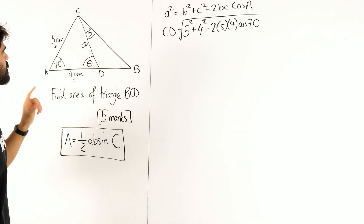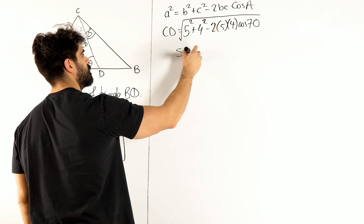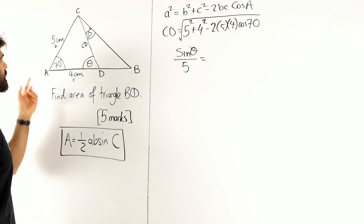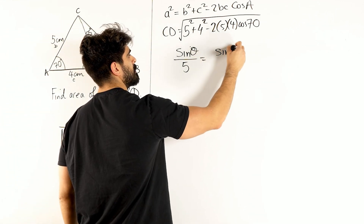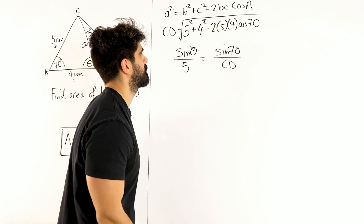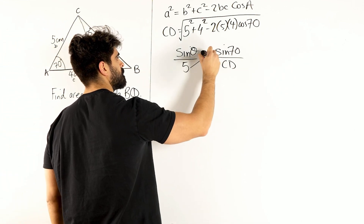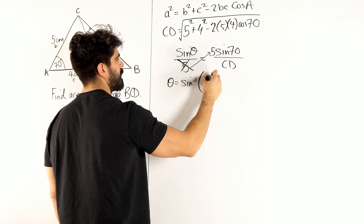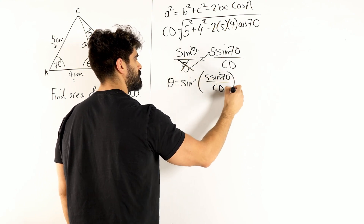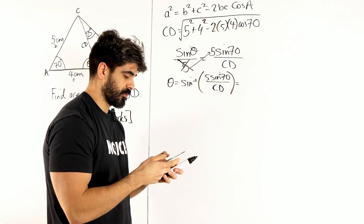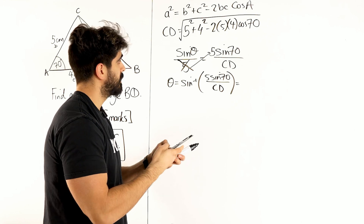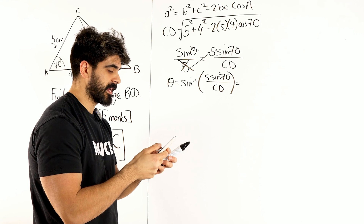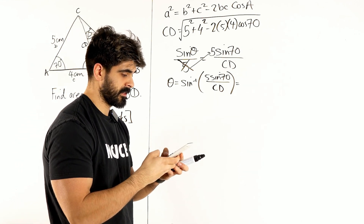I'm going to start calling this CD again. So the sine rule says: sine of theta over its opposite length 5 equals sine 70 over CD. We multiply through by 5, then take the inverse sine: theta equals inverse sine of (5 × sine 70 / CD). Now I'm going to type this in — 5 squared, 4 squared, minus 2 × 5 × 4 × cos 70. I need to check my calculator is in degrees, not radians. I get CD = 5.22.